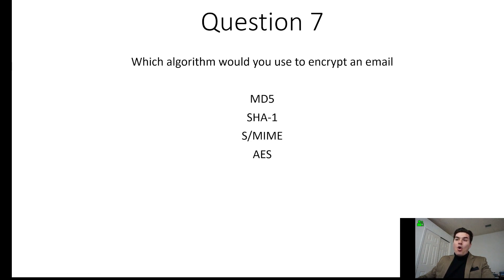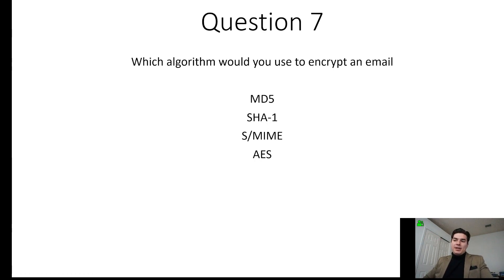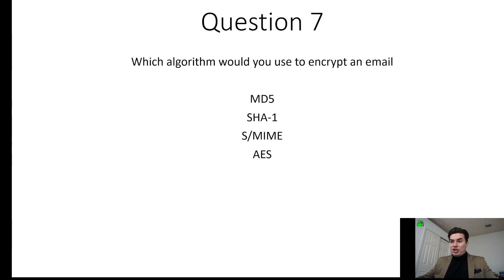Question number seven: which algorithm would you use to encrypt an email? The options are MD5, SHA-1, S/MIME, or AES. Anytime you see MD or SHA, think hashing algorithm — SHA stands for hashing algorithm and MD stands for message digest, which is an earlier form of hashing. S/MIME is the correct answer; it is used for sending digitally signed and encrypted emails or messages. AES is an encryption type, but specifically the best answer here is S/MIME.